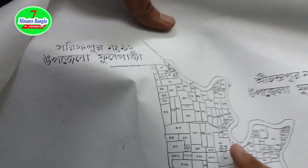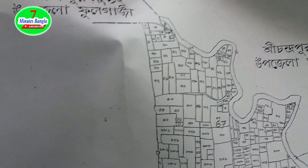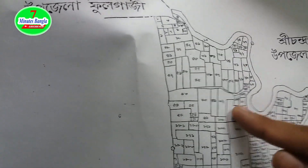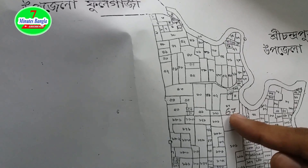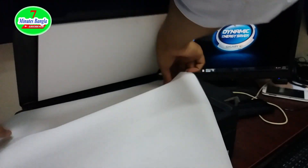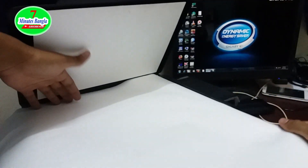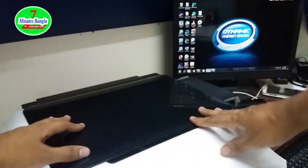So viewers, let's start the video. Dear viewers, now I will discuss what our requirement is for measurement of land from a moza map by AutoCAD software. You see that this is my moza map, and plot number 67 is our subject matter of measurement. That's why I've opened the section of the moza map where my plot number is situated.